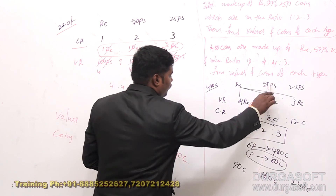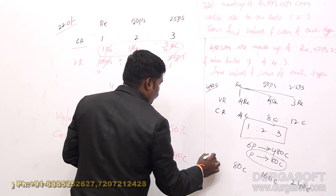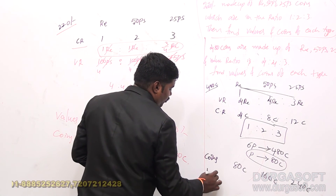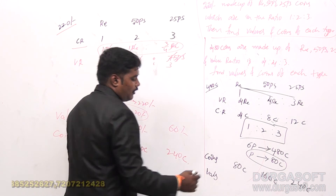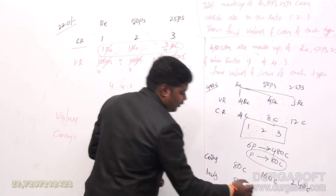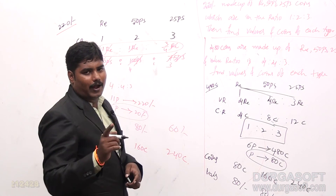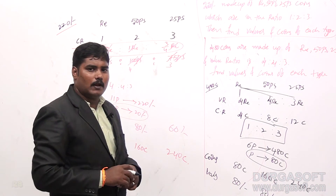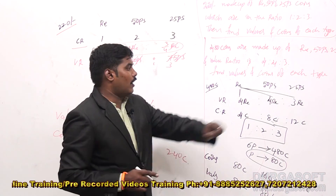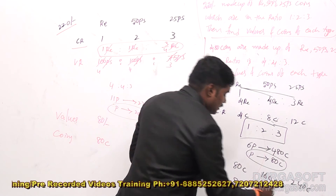So: 1-rupee coins are 80, 50-paise coins are 160, and 25-paise coins are 240. These are the coins of each type. For values: 80 coins of 1 rupee gives 80 rupees. 160 coins of 50 paise — for 1 coin the value is half a rupee, so 160 coins gives 80 rupees. 1 coin of 25 paise is one-fourth of a rupee, so 240 coins gives 60 rupees.